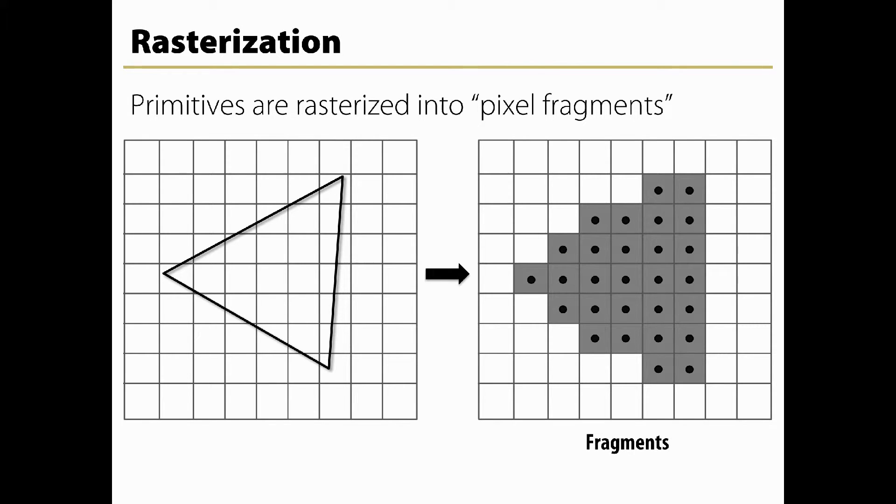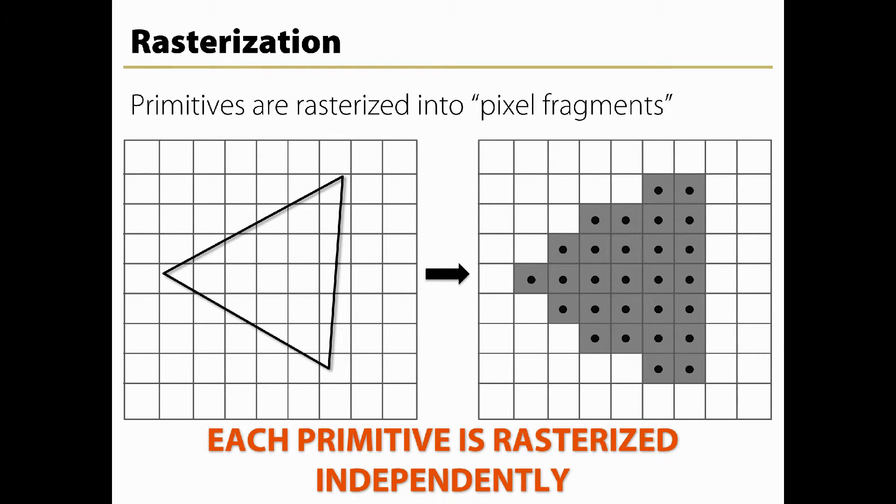Primitives that reach this stage are then rasterized in the order in which they were given. The result of rasterizing a primitive is a sequence of fragments. A fragment is a set of state that is used to compute the final data for a pixel, or sample if multisampling is enabled, in the output frame buffer.